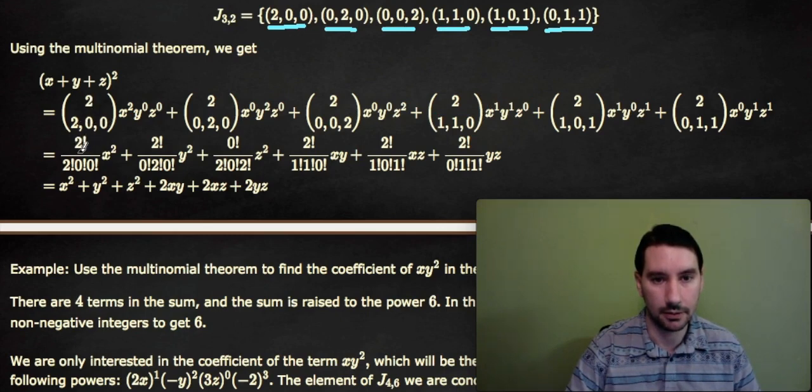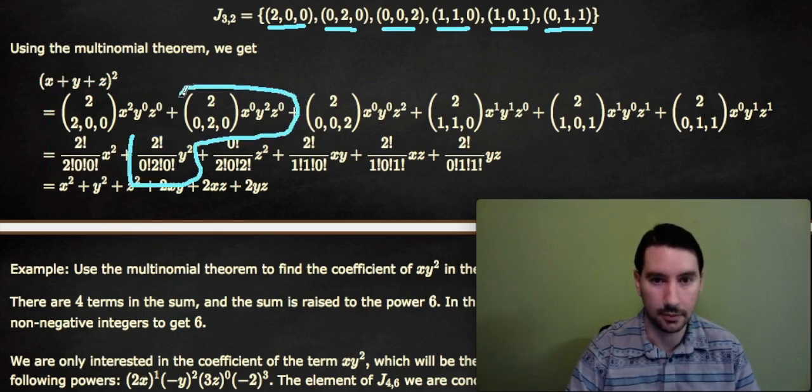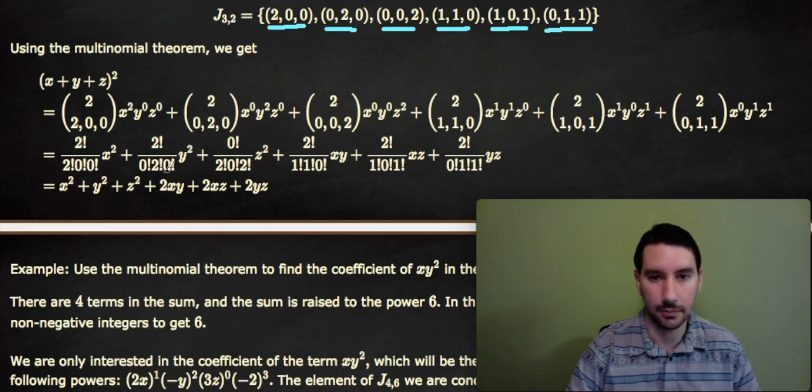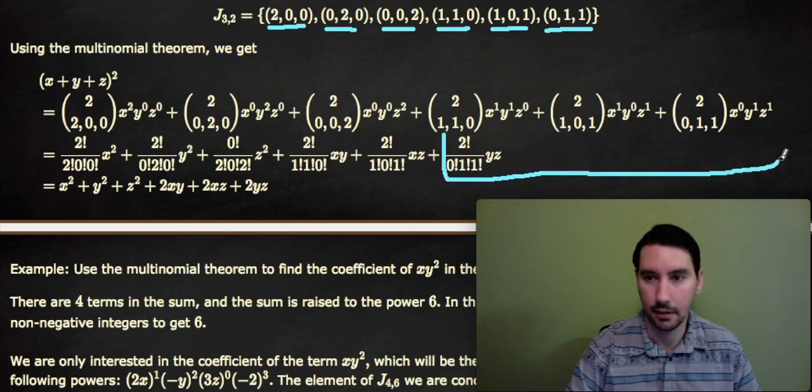Now we use the formula here, so 2 choose (2,0,0) is 2! over 2!0!0!. And x² y⁰ z⁰ is just x². So this term corresponds to this. And then we go to the next term, which corresponds to the next term above. So the 2 choose (0,2,0) means 2! over 0!2!0!. x⁰ y² z⁰ is just y².